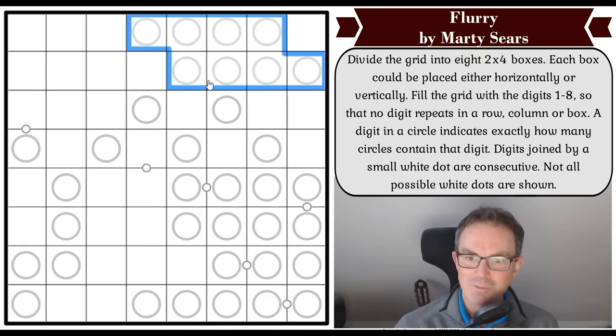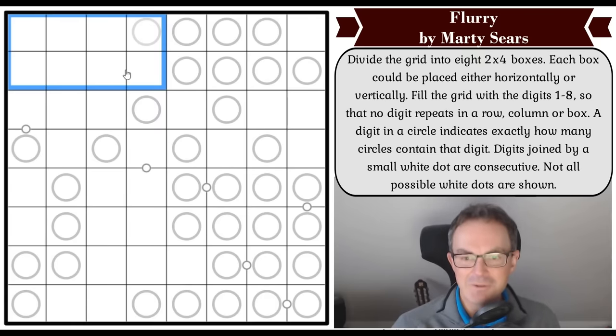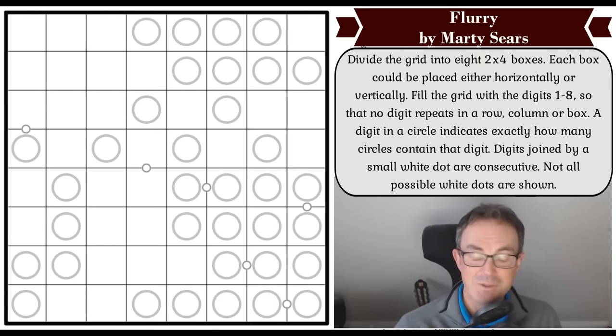The rule is that we've got to divide the grid into two by four boxes, but the boxes can go vertically or horizontally. So we're going to have to work out where the boxes go. It's got a huge approval rating on Logic Masters Germany with lots of lovely comments.